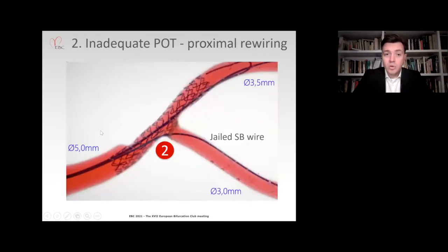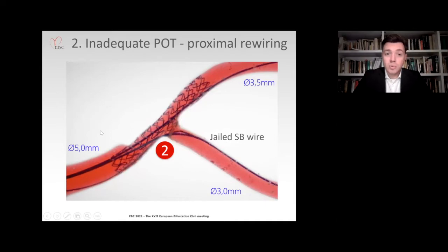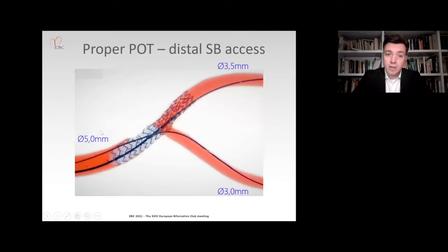Now let us focus on the more distal segment at the bifurcation core. If you do not perform POT, or if it is performed incorrectly, you will practically always aim for the proximal cell when trying to rewire the side branch, as you can see nicely here in this Bench test. This is not what we try to achieve with crossover stenting — we try to go as distal as possible when re-accessing the side branch. So how can we correct this and give ourselves a chance of distal side branch access? By performing proper POT.